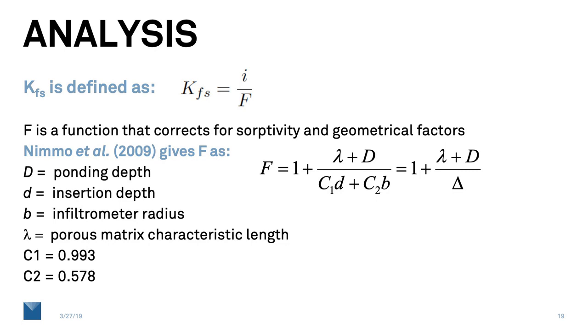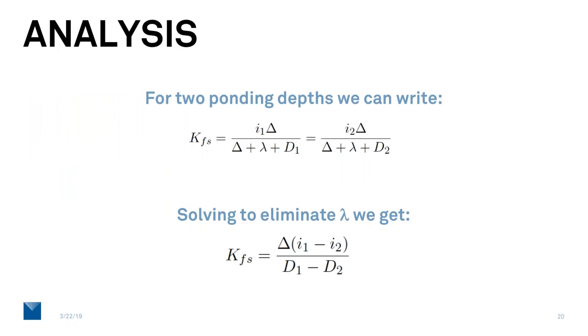We combine those into the factor delta that is characteristic of the infiltrometer that we built. So if we were to make measurements at two ponding depths, we can write two equations in two unknowns. And from those two equations we can eliminate the lambda factor, which is the characteristic length of our porous medium. So we get the hydraulic conductivity in terms of the two ponding depths that we have and the characteristics of the infiltrometer and the infiltration rates that we measure.